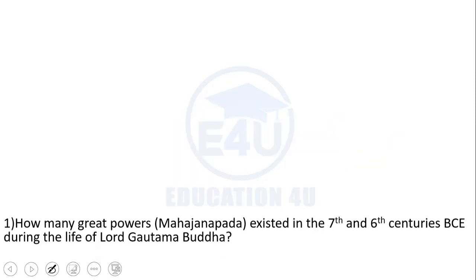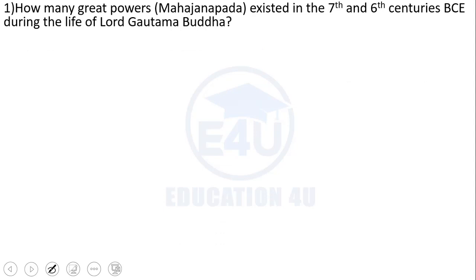The first question is: how many great powers existed in the sixth and seventh centuries BCE during the life of Lord Gotama Buddha? During Gotama Buddha's lifetime, how many great powers were there in India? These are known as Mahajanapadas.